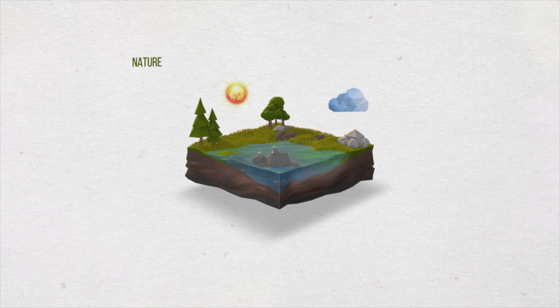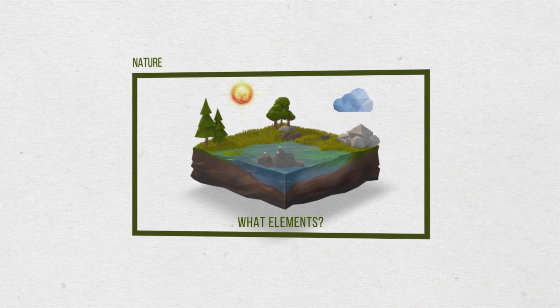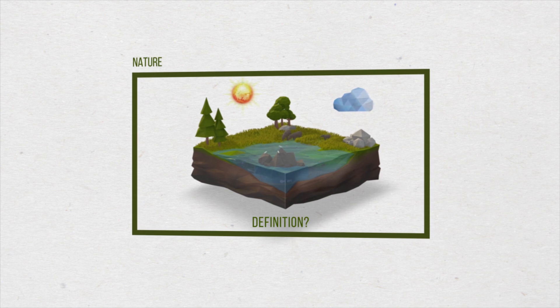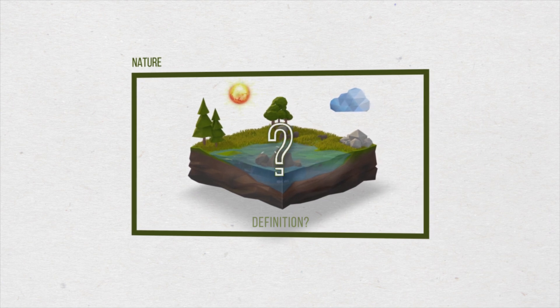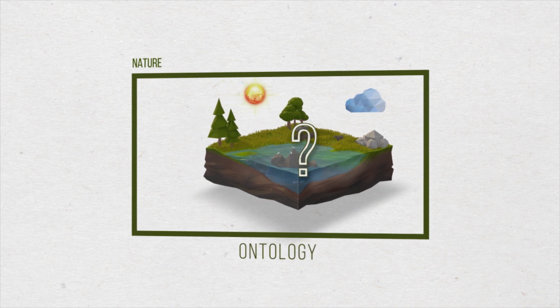That is, if nature were represented by a universal set, what elements would belong to it? How would this set be defined? Thus, a fundamental part of the scientific theology system is an ontology of nature.